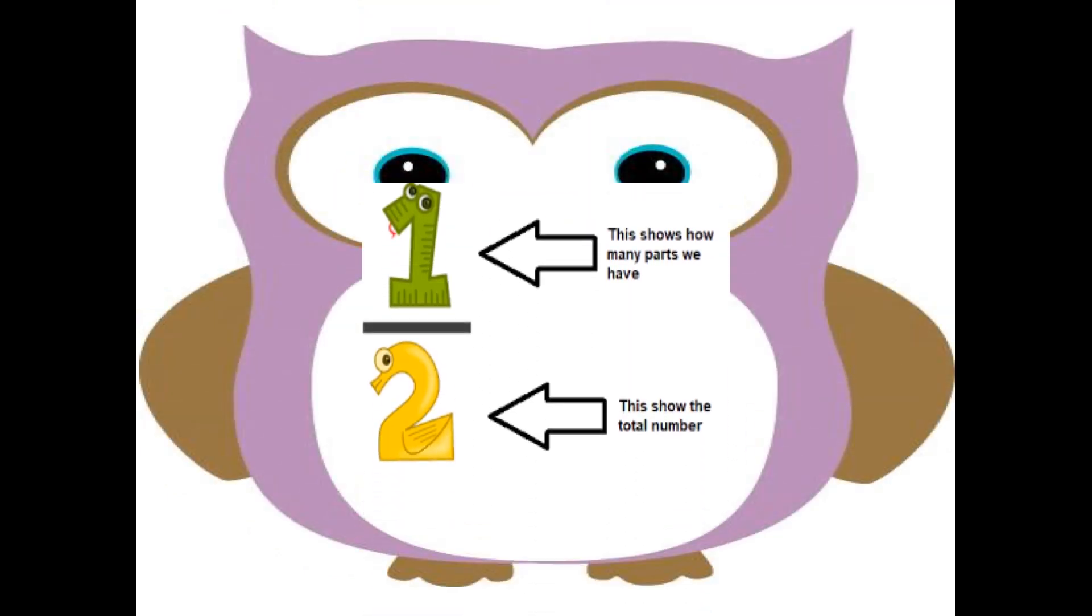One over two. One is the numerator, which shows how many parts we have. Two is the denominator. This shows the total number.